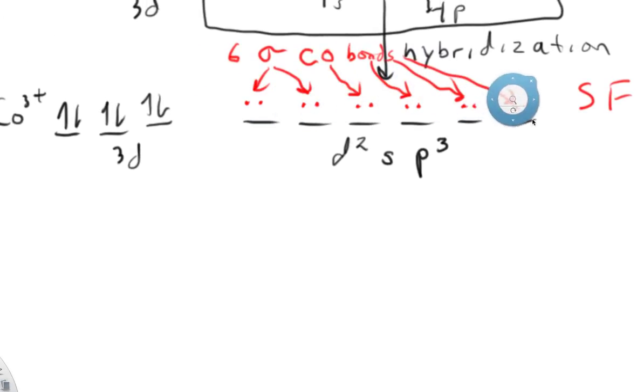the electrons of the ligand interact with the electrons and of course the orbitals on the 3D level in this case. And crystal field theory takes into account that interaction, whereas valence bond theory doesn't really explain how this pairing occurs. So let's look at this from the perspective of crystal field theory.